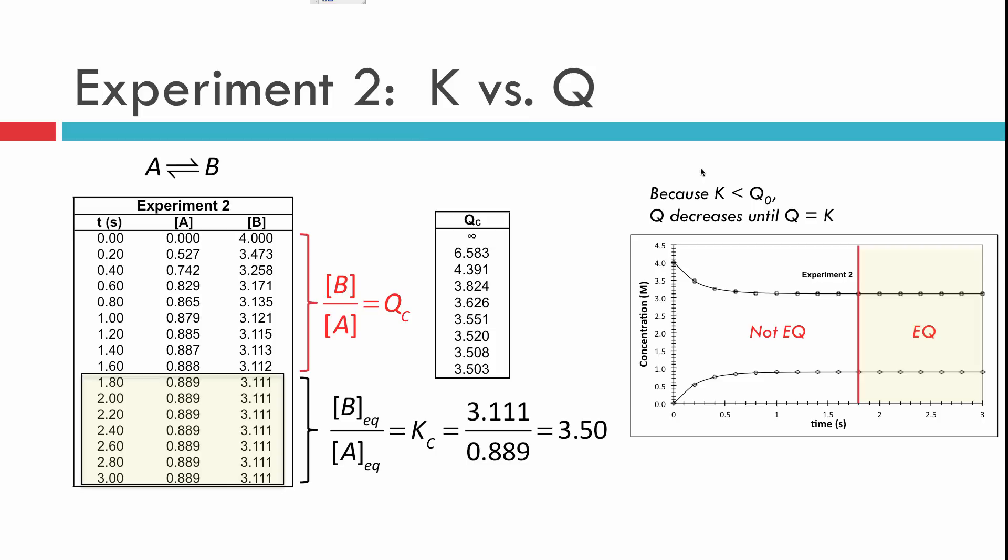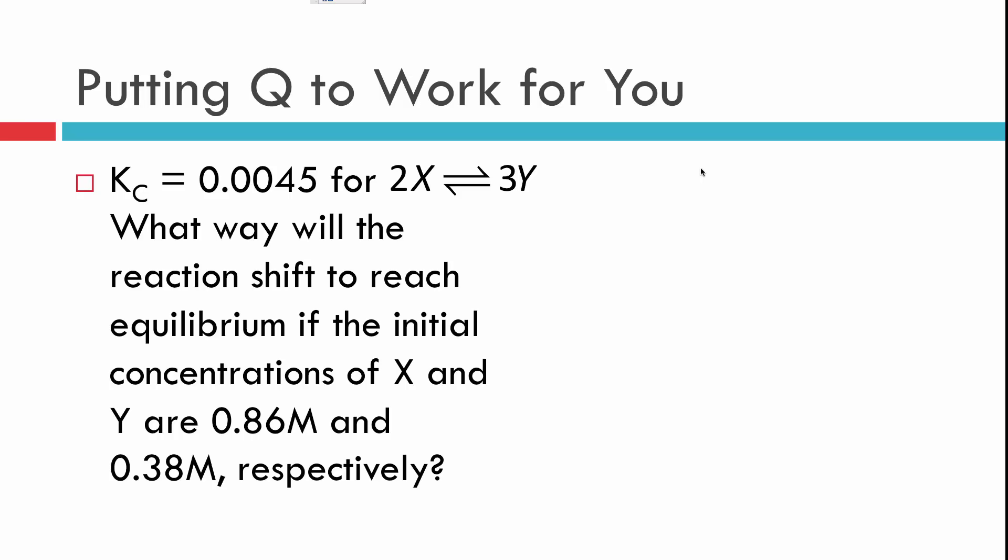Fantastic. Let's see if we can put this together in a problem that's brand spanking new. So we've got some reaction. It's 2X goes to 3Y, and we're given an equilibrium constant. And we're asked, which way will this shift to reach equilibrium? Now, it's possible that it could already be at equilibrium, but in this particular case, it's not going to be.